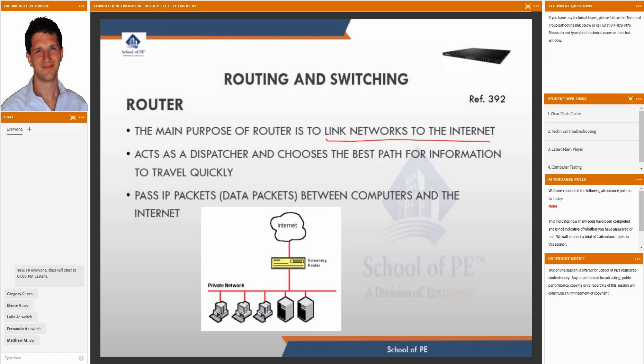It does switching because it takes a packet that comes from a port and decides where it should go. But as we said, it does switching at a larger scale. It has information about the entire internet somehow.